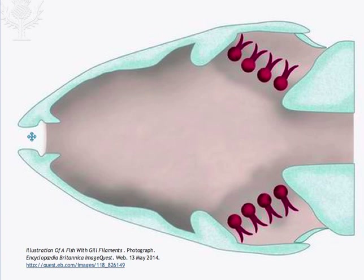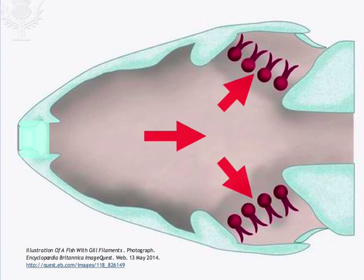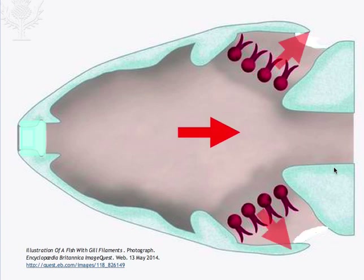In the osteichthyes, the bony fishes, water is taken in through the mouth. The floor of the mouth is lowered to increase the volume. The mouth is then closed and, with the gill covers or operculum also closed, the floor of the mouth is raised. This builds up a very high positive pressure inside the mouth cavity. The gill covers then open and a jet of high pressure water is sent over the gills. This is an example of positive pressure ventilation.